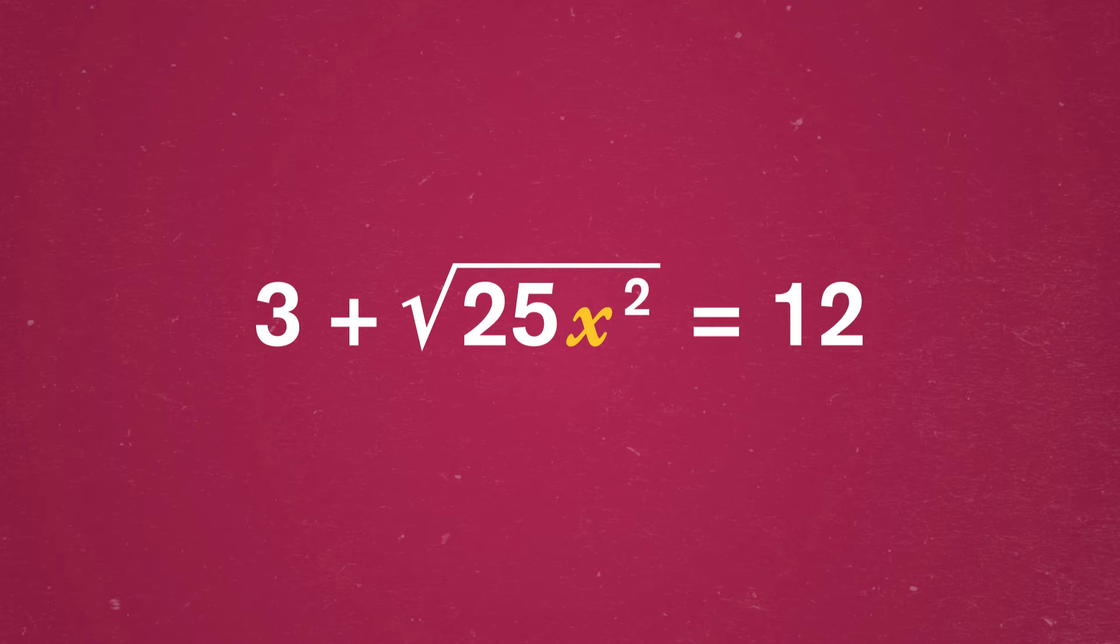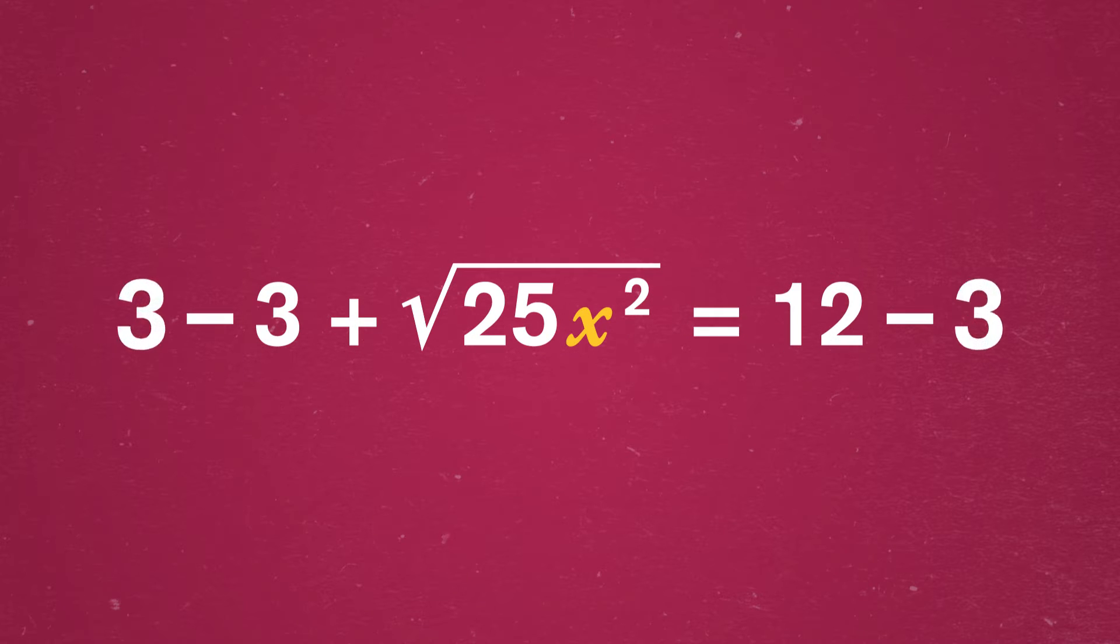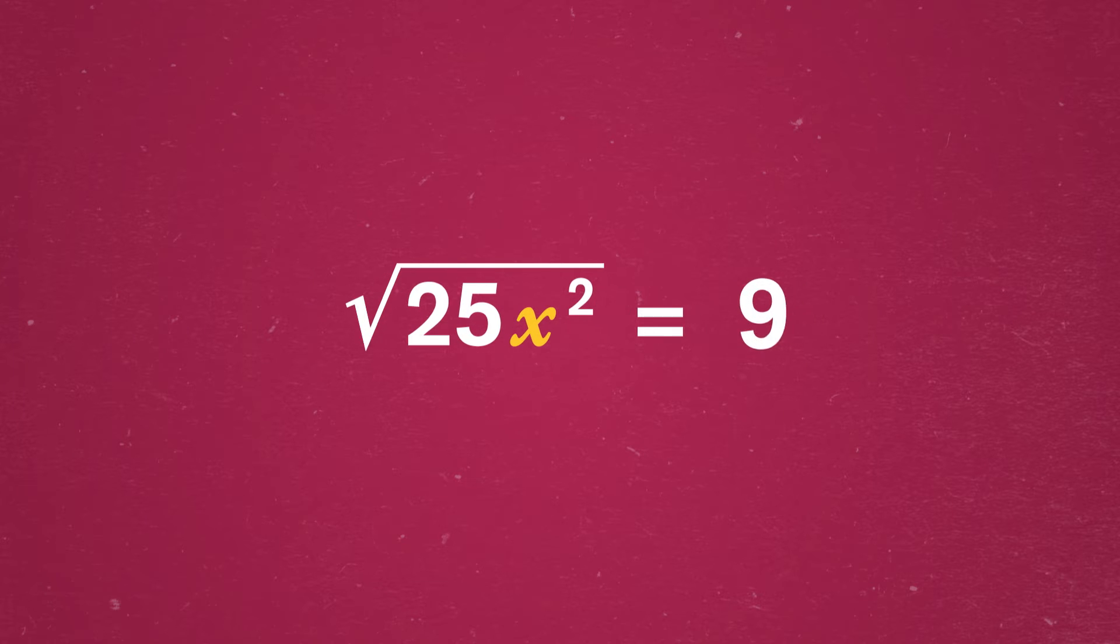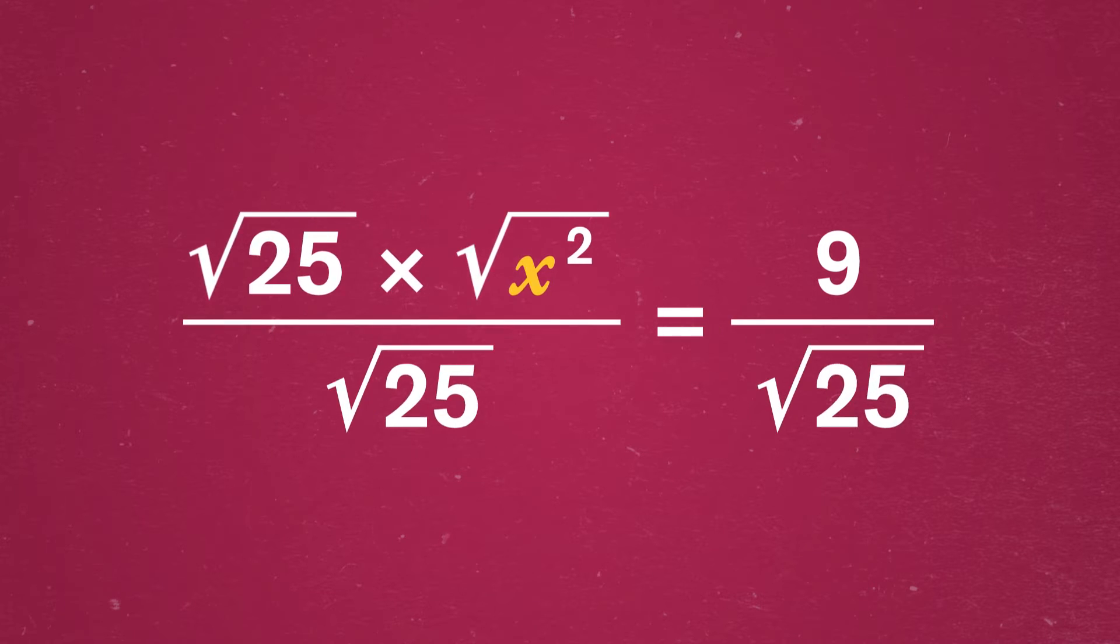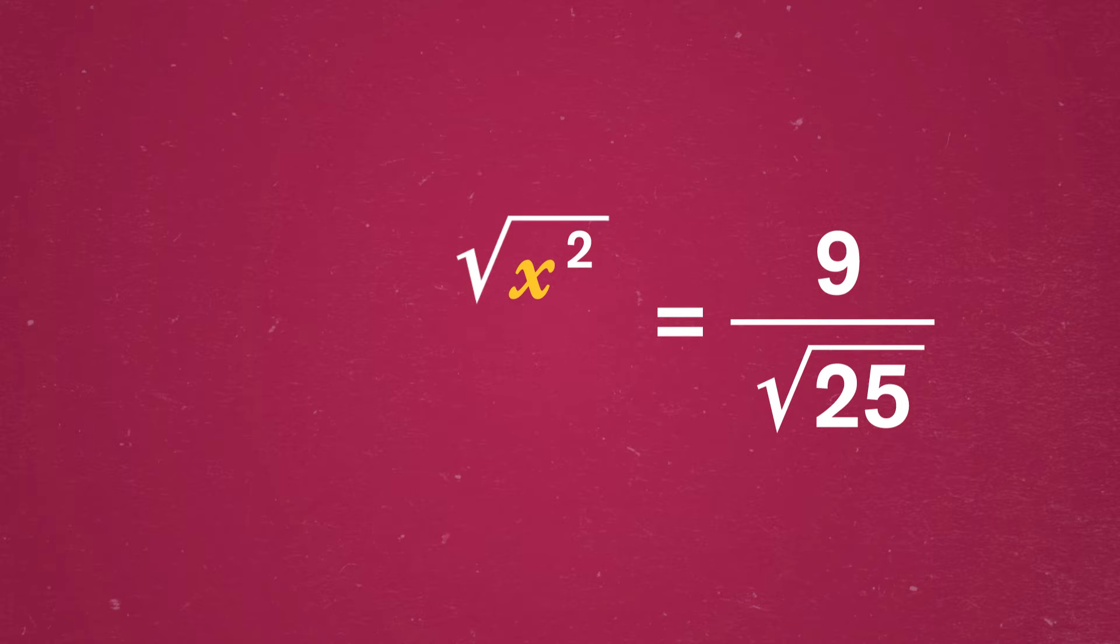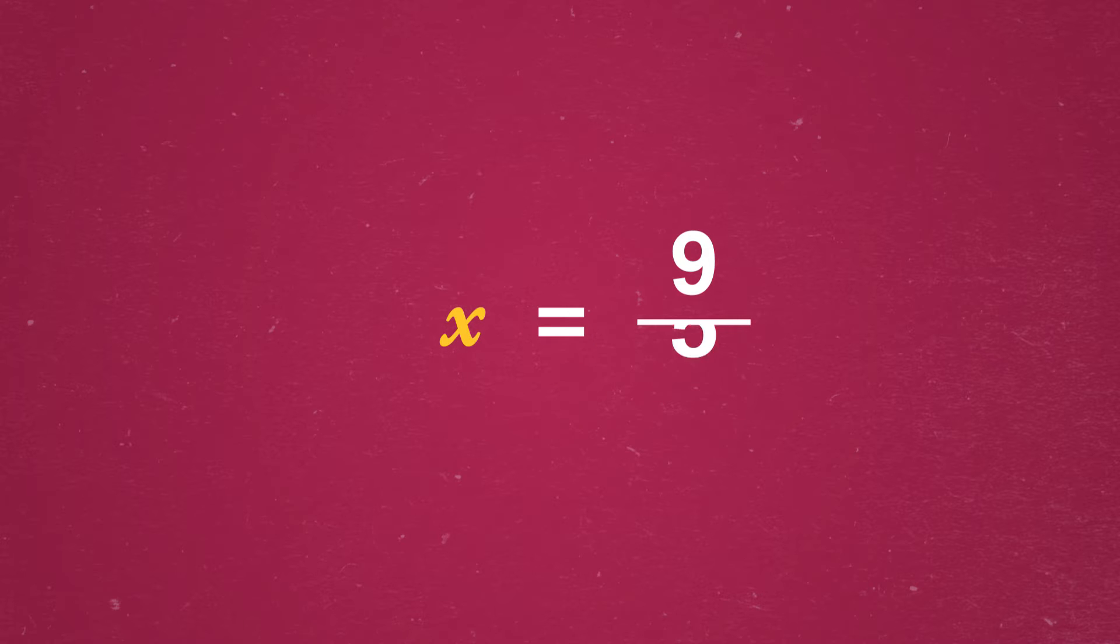So in algebra, we might see a radical expression, or an algebraic expression with roots. Like 3 plus the square root of 25x squared equals 12. Now after we subtract 3 from both sides, it might seem like there's nothing left to do. But actually, we can rewrite this as the square root of 25 times the square root of x squared equals 9. And from there, we can actually solve for x. By dividing both sides by the square root of 25, we get x equals 9 over the square root of 25. That is x equals 9 over 5.